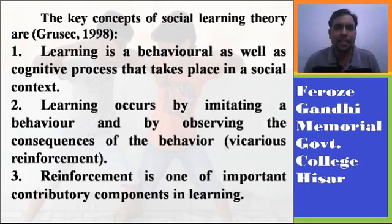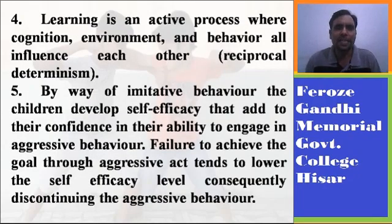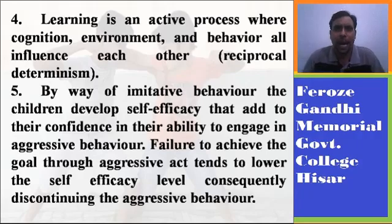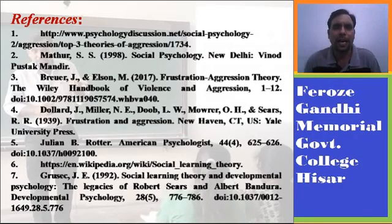The key concepts of social learning theory as defined by Grushak (1998) are: first, learning is a behavioral as well as cognitive process that takes place in a social context. Second, learning occurs by imitating behavior and observing its consequences — known as vicarious reinforcement. Third, reinforcement is an important component in learning. Fourth, learning is an active process involving cognition and behavior — referred to as reciprocal determinism. Fifth, by imitating behavior, children develop self-efficacy, adding to their confidence in engaging in behavior. Failure to achieve goals through aggressive acts lowers self-efficacy and consequently discontinues aggressive behavior.